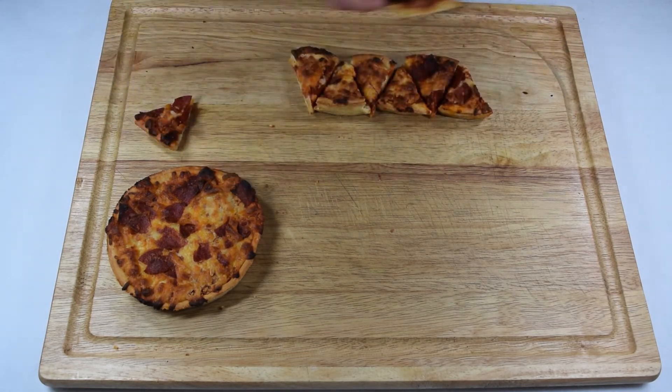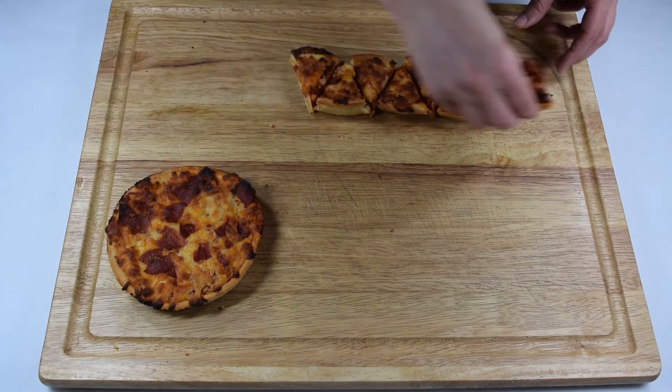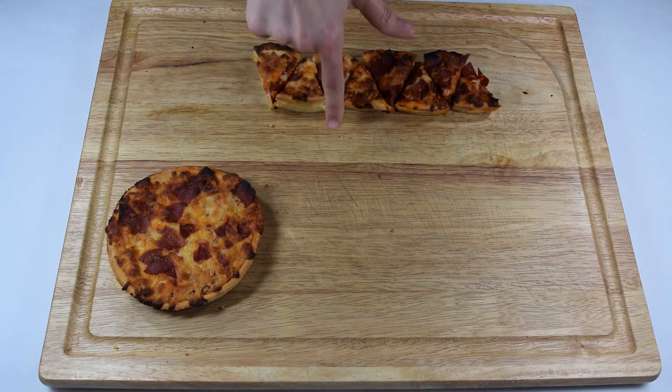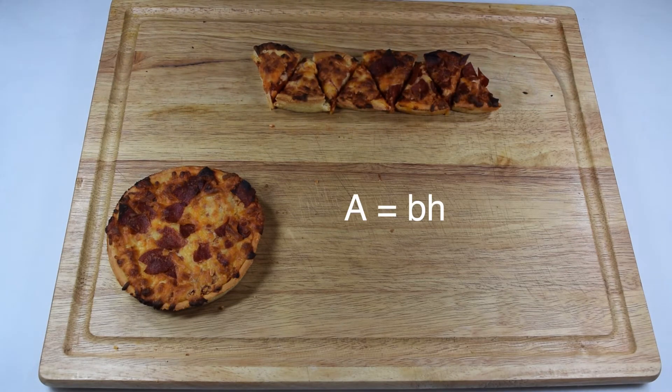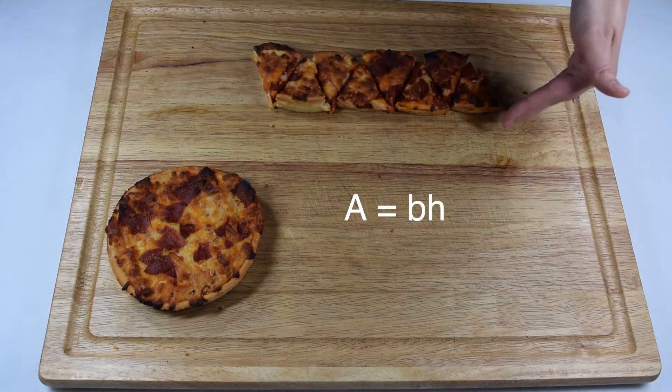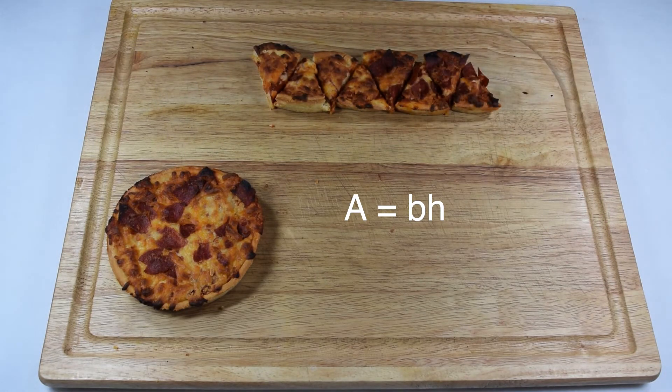When we rearrange these eight slices, we can turn them into something that closely resembles a parallelogram. We know to find the area of a parallelogram, we would multiply base times height. We're going to use this figure now to see how it relates better to the circle and see if we can change this equation into what we need for circles.